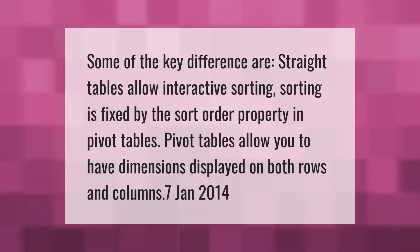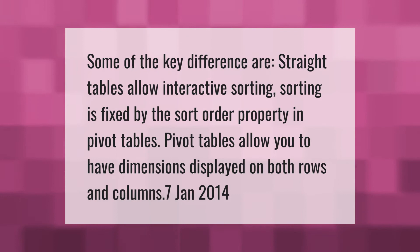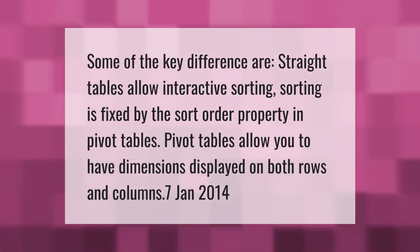Some of the key differences: straight tables allow interactive sorting, whereas sorting is fixed by the sort order property in pivot tables. Pivot tables allow you to have dimensions displayed on both rows and columns.